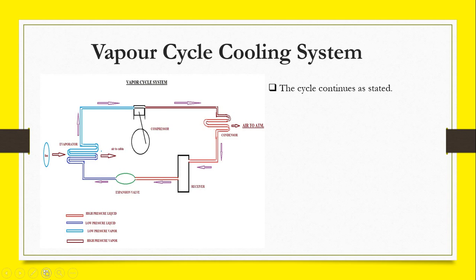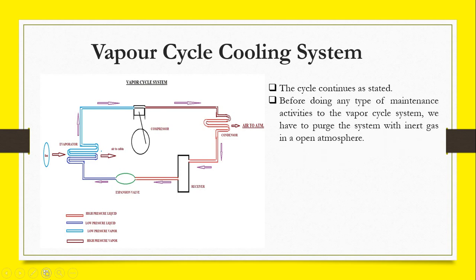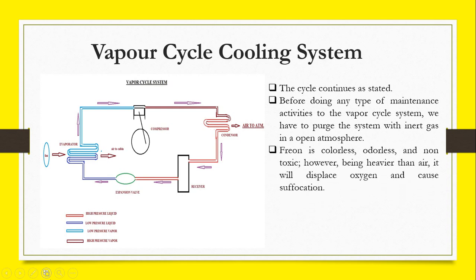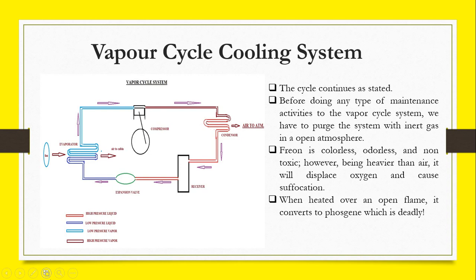Before doing any type of maintenance activity to the vapor cycle system, we have to purge the system with inert gas in an open atmosphere. Freon is colorless, odorless, and non-toxic. However, being heavier than air, it will displace oxygen and cause suffocation. But when heated over an open flame, it will be deadly. It is dangerous.